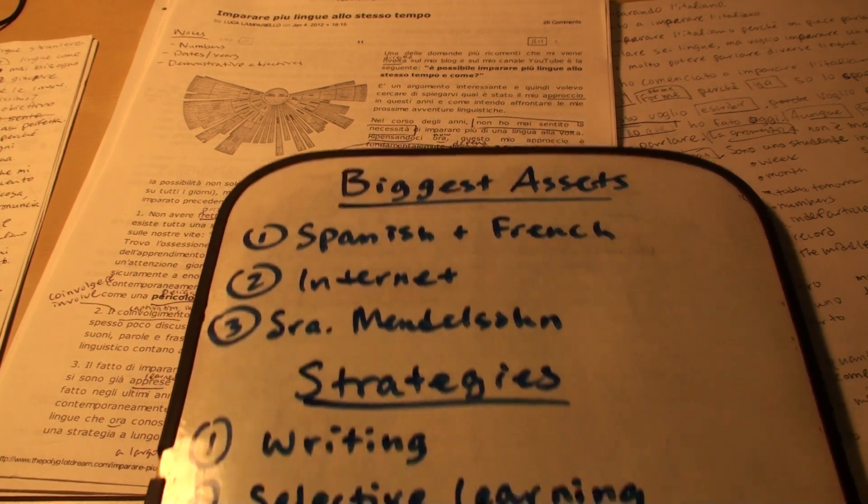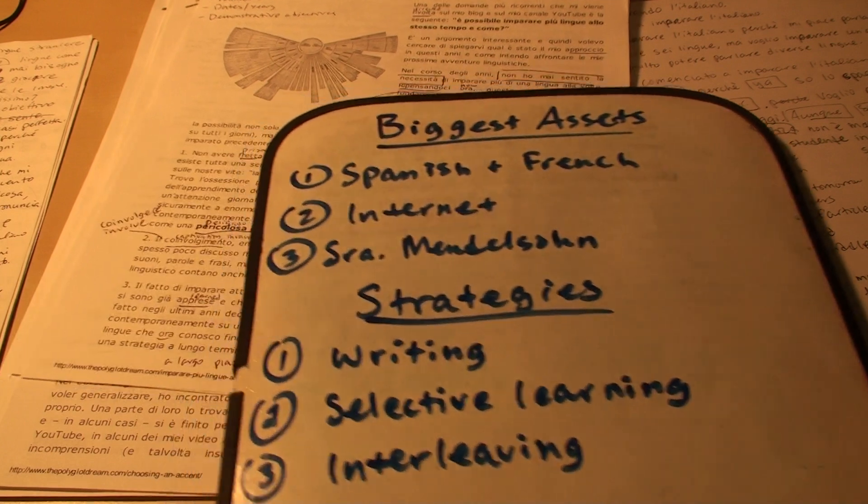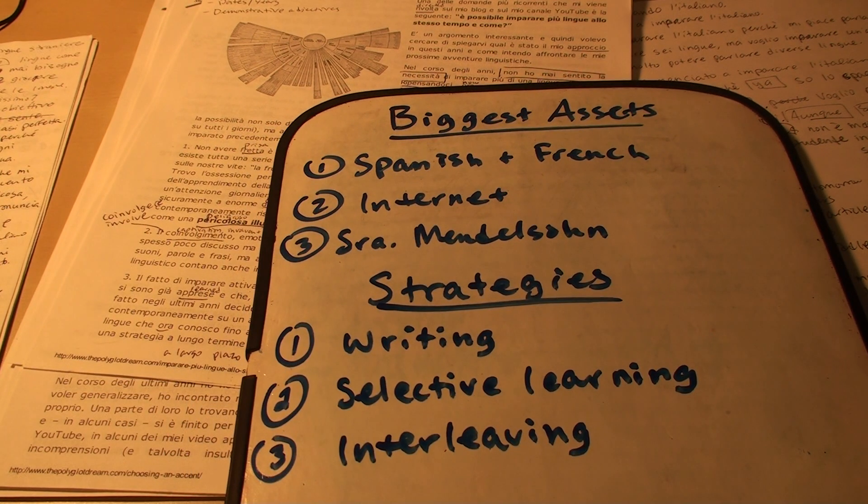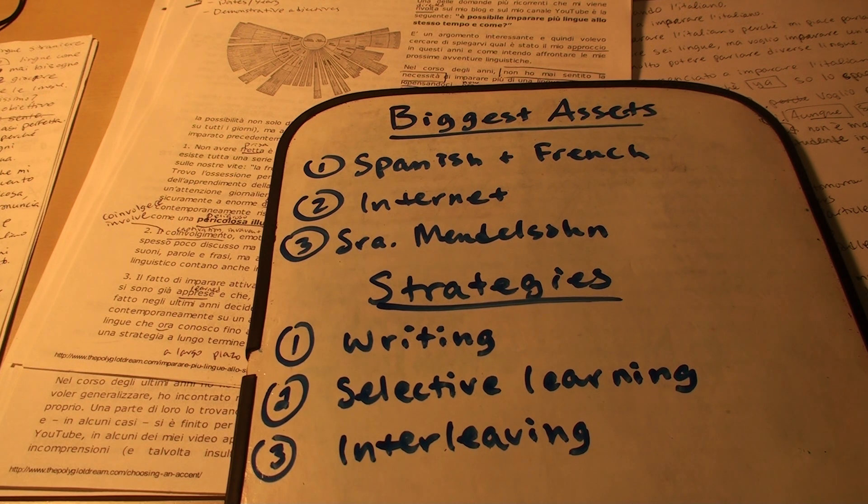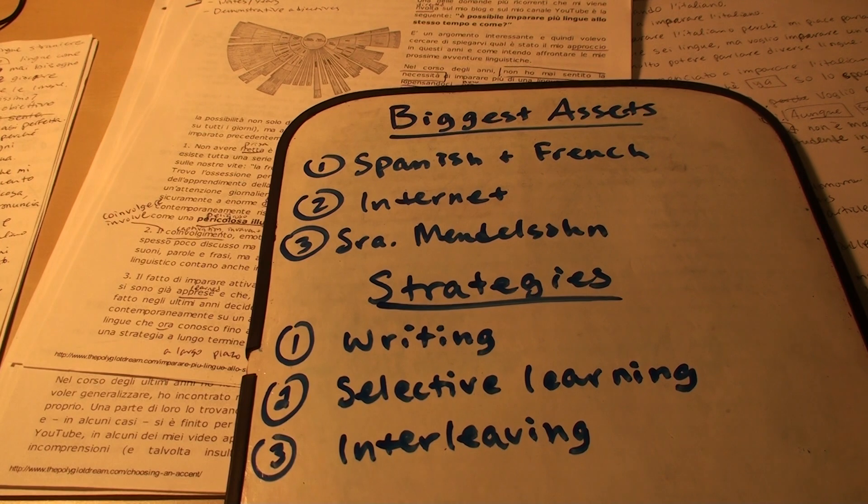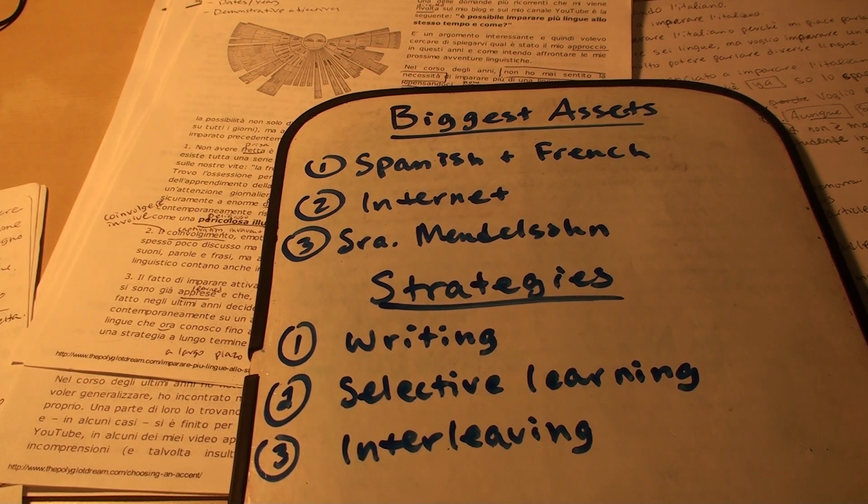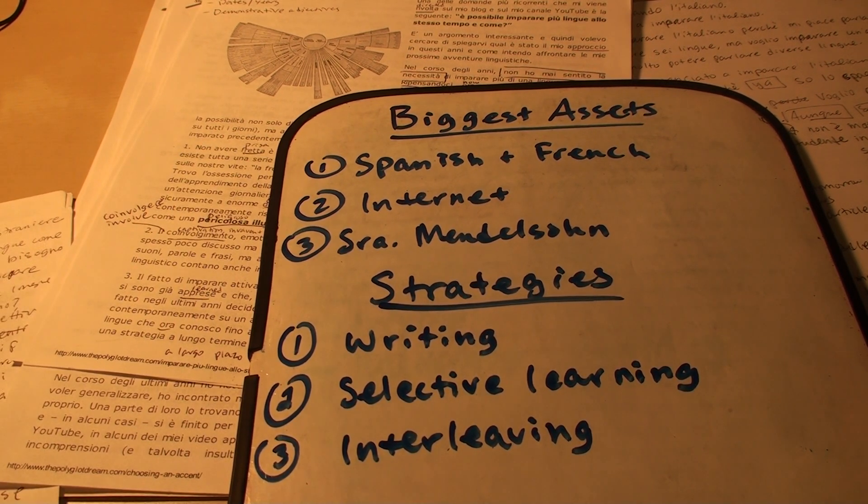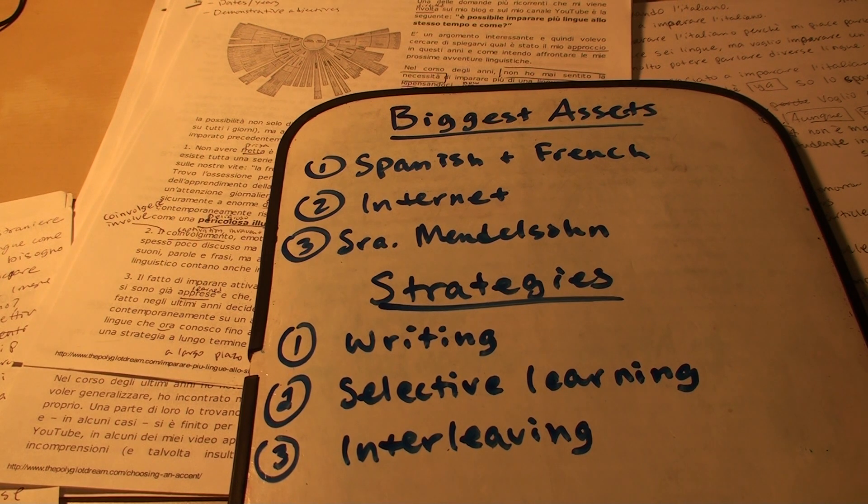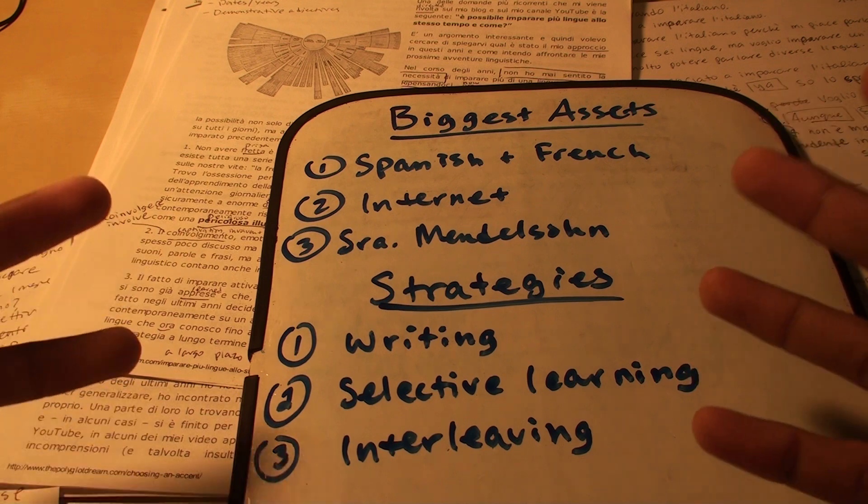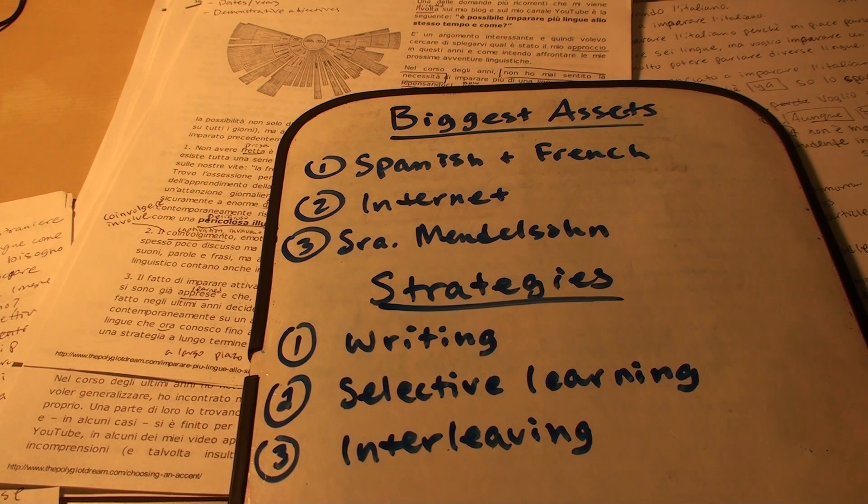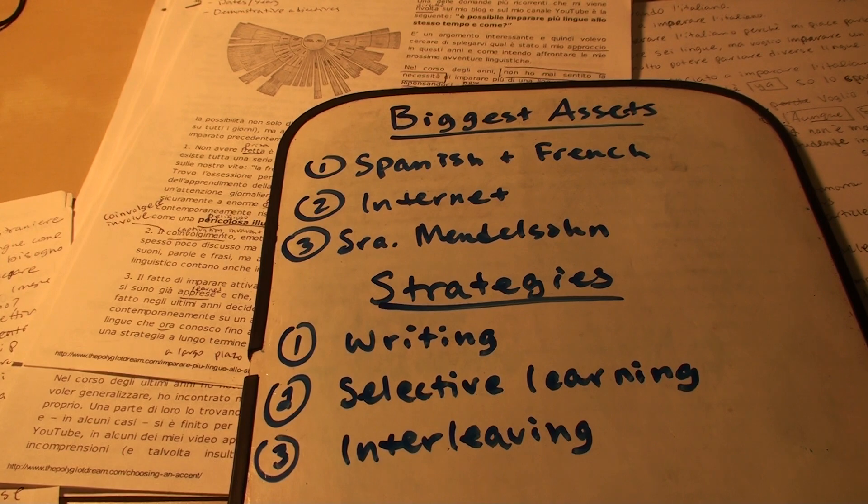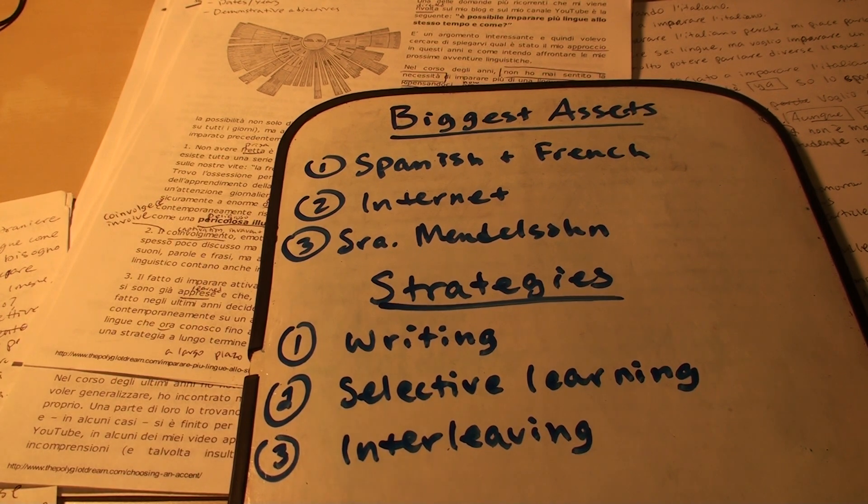So now I'm going to talk about strategies I used. And these are also in order of importance. So the most important strategy that I think I applied in learning Italian was writing, which I had never really done before when learning languages. So what I mean by writing is, I'd write in Italian things that I would say in English. So I would write in Italian as if I was speaking in English. This achieves a couple of things.